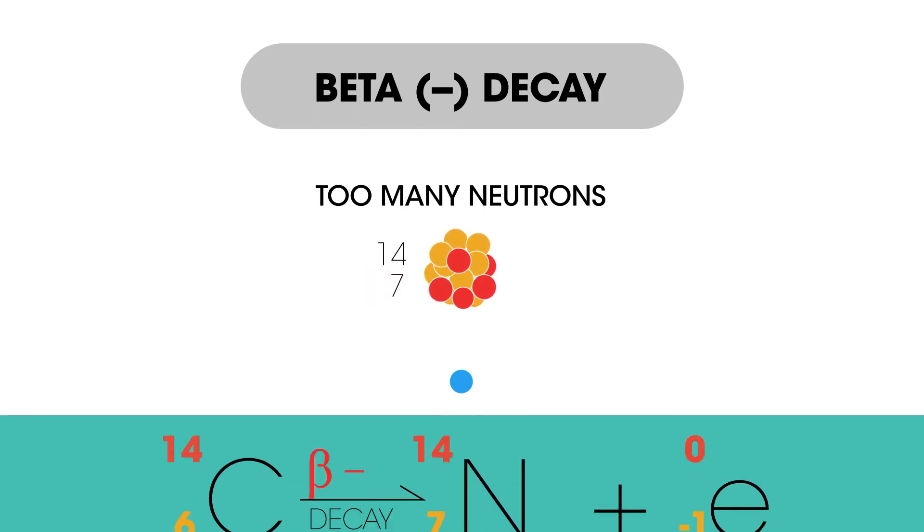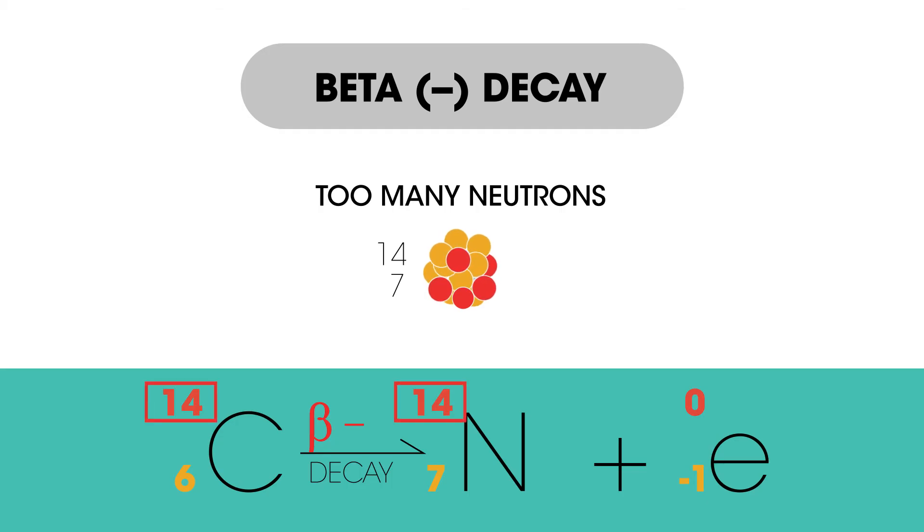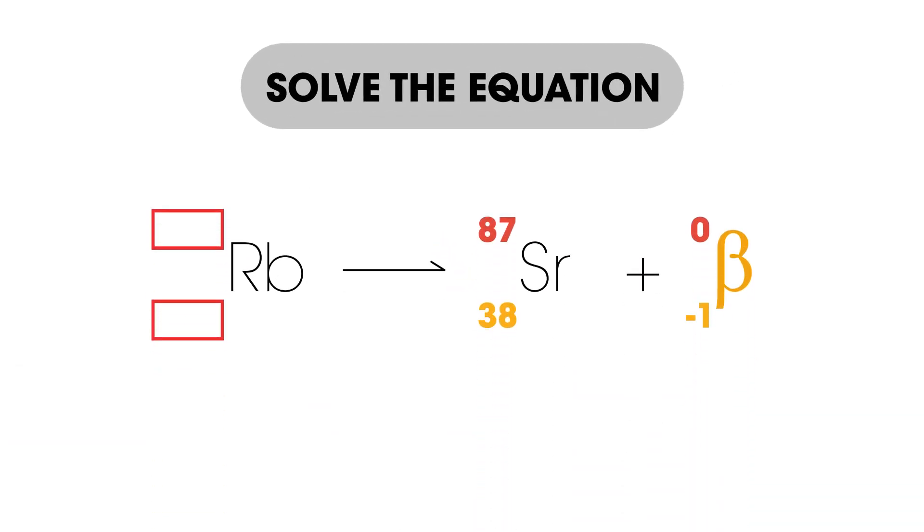The equation looks like this. We can see the mass number is 14 on both sides of the equation while the atomic number remains at 6 since 7 minus 1 equals 6. What about this equation? Can you fill in the missing numbers? How did you do?